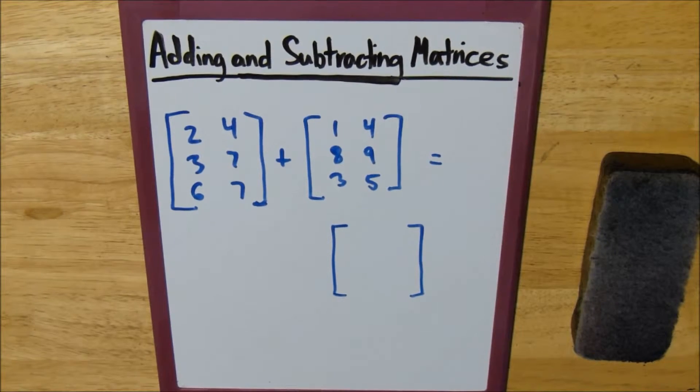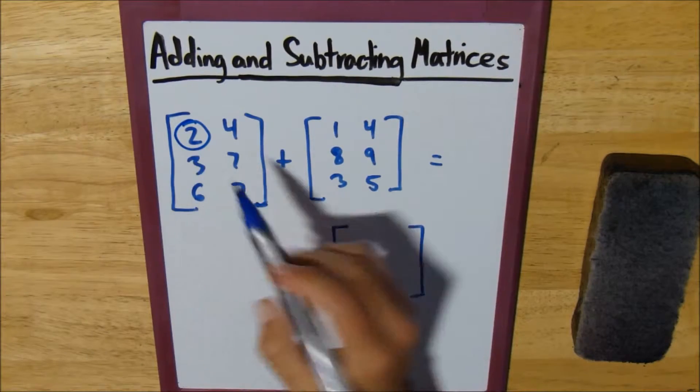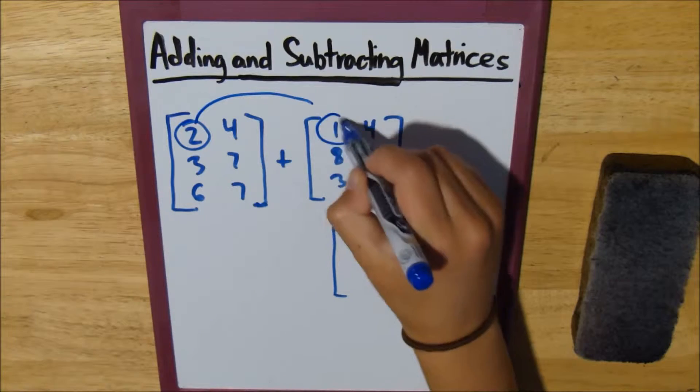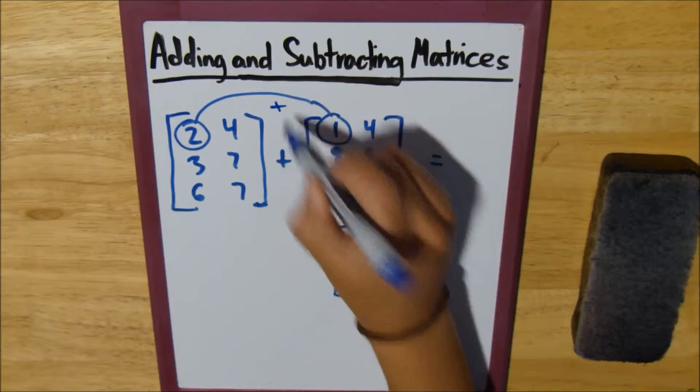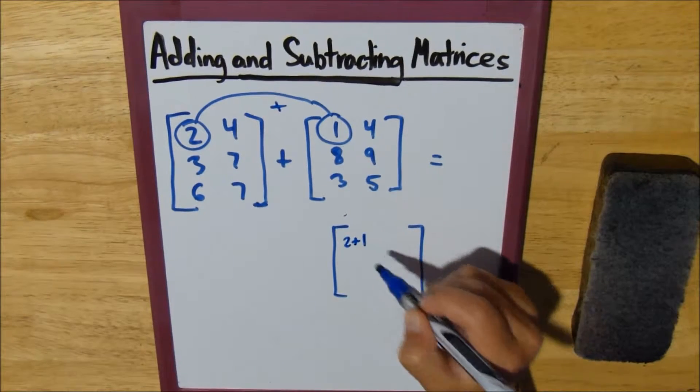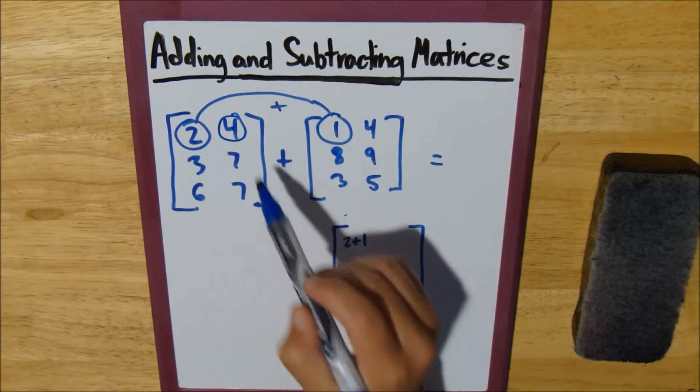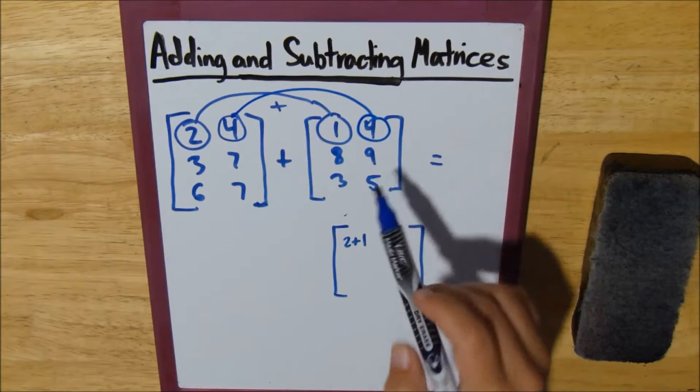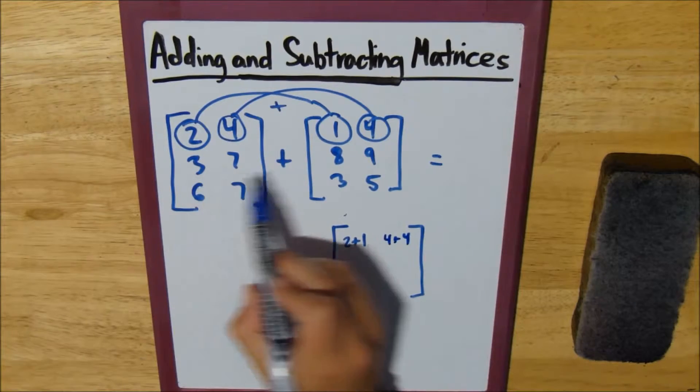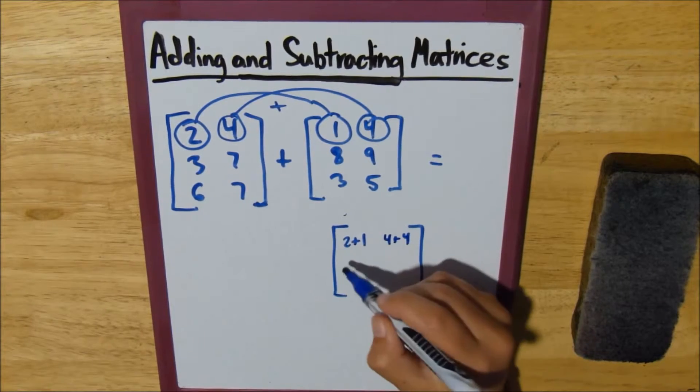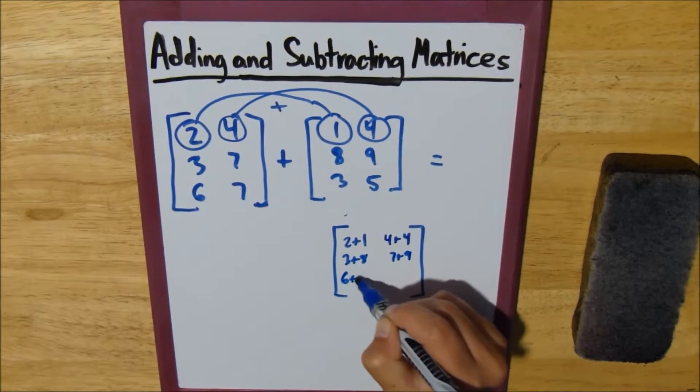So essentially, adding matrices means you take the first number of the first row, first column and add it to the corresponding first number. So 2 plus 1, and then you move on to the second number of the first row and add it to the corresponding number. And then you just keep doing that: 3 plus 8, 7 plus 9, 6 plus 3, and 7 plus 5.